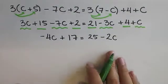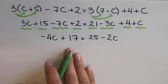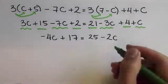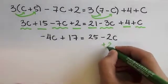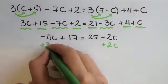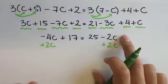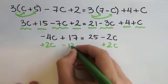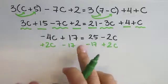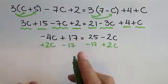Now, remember we want to group all the variables on the left side and all the numbers on the right side. So, I add 2c on both sides, looking to cancel out this negative 2c. And I subtract 17 on both sides, looking to cancel out this positive 17.